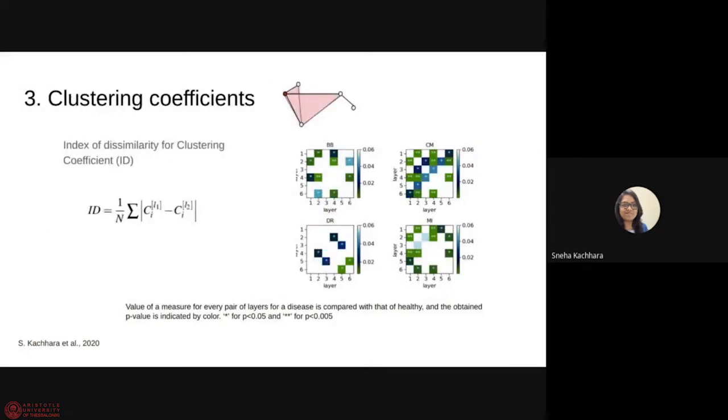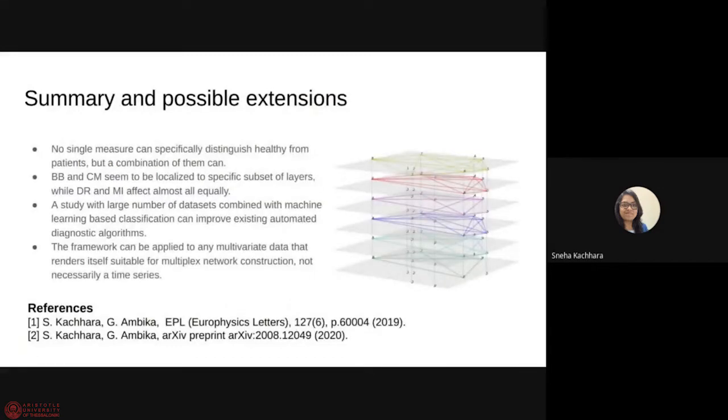Coming to the clustering coefficients we found similar difference. What we did was we calculated the clustering coefficients of all the nodes and then we compared them with the clustering coefficient of the corresponding nodes. So this is the index of dissimilarity and again we found some discrete pair of layers for bundle branch and dysrhythmia but many pair of layers for cardiomyopathy and myocardial infarction. So to summarize our results what we found was there is no single measure that can specifically distinguish healthy from patients at least not from this particular framework but a combination of them can. The diseases such as bundle branch block and cardiomyopathy we found them to be localized and dysrhythmia and myocardial infarction seem to be affecting all the parts of the heart.